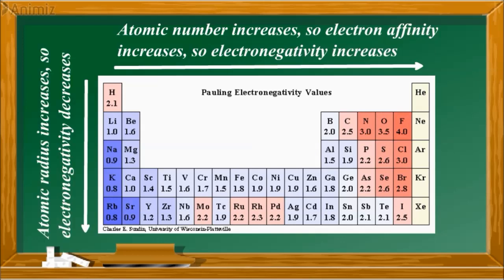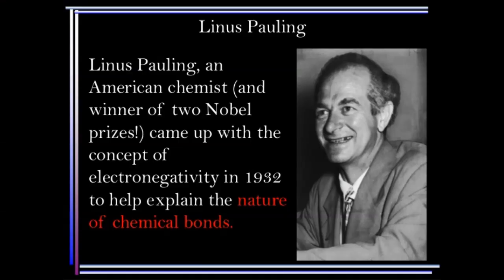Coming to atomic radius, down the group, atomic sizes of elements increase due to the increase in the number of shells and thus there is an increased distance between the valence electrons and the nucleus. Or in other words, there is a greater atomic radius. Hence, nuclear attraction on the shared pair of electrons decreases and thus the electronegativity decreases.